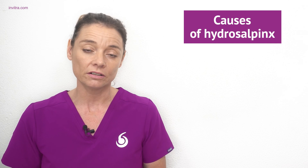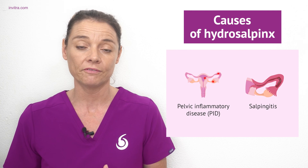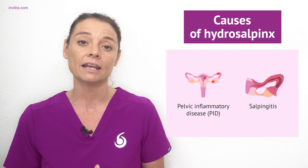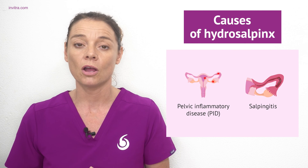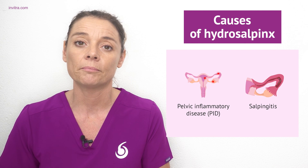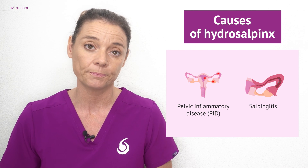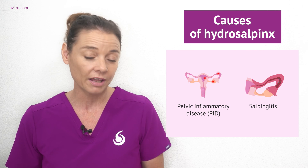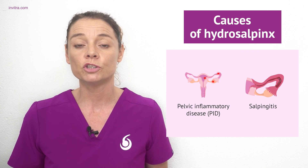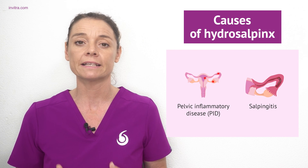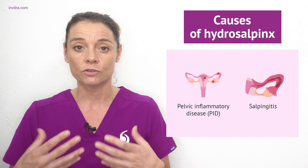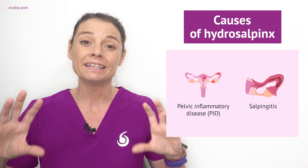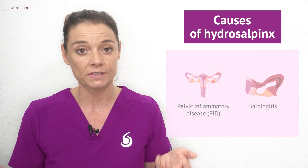Hydrosalpinx is usually the result of an infection such as pelvic inflammatory disease. Two of the most common culprits of pelvic inflammatory disease are chlamydia and gonorrhea, but it can be caused by other naturally occurring bacteria within the female reproductive system. A chronic, undiagnosed, and untreated case of pelvic inflammatory disease can lead to inflammation of the fallopian tubes called salpingitis. If this is not treated it can result in the fallopian tubes becoming swollen and distended and full of fluid, and this is called hydrosalpinx.